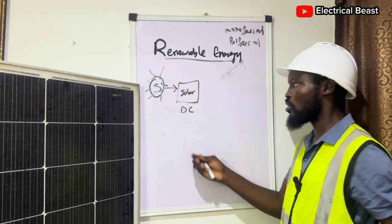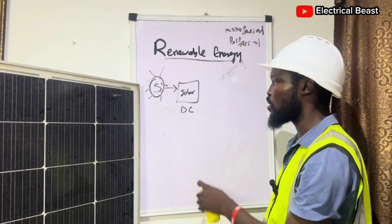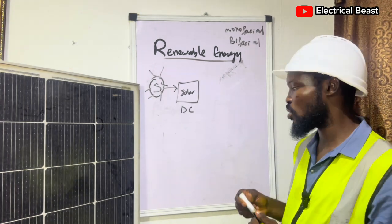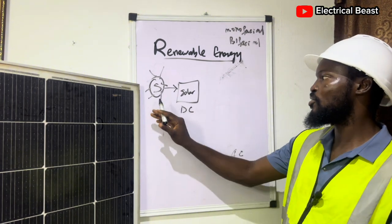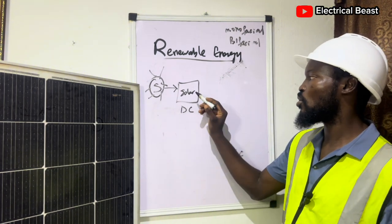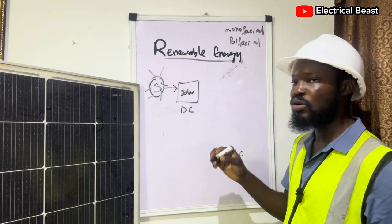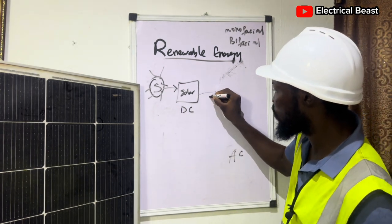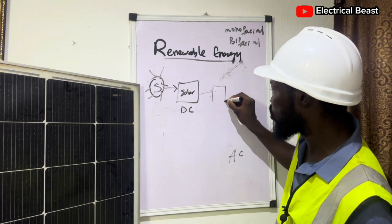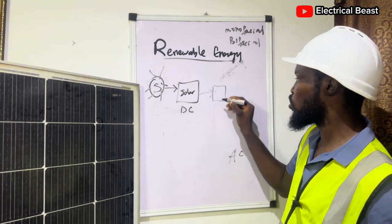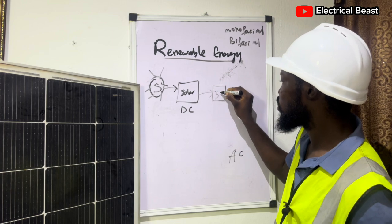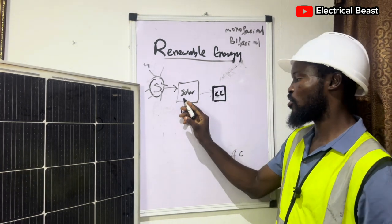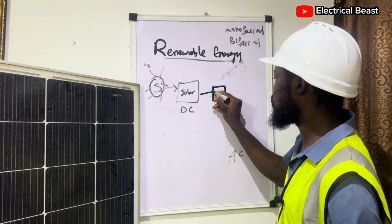This solar panel converts energy from the sun to direct current. Now you know you don't use direct current for the loads we have in our house — they use alternating current AC. But the energy from the sun after conversion from the solar panel is DC. The energy generated from the solar panels then enters the charge controller.